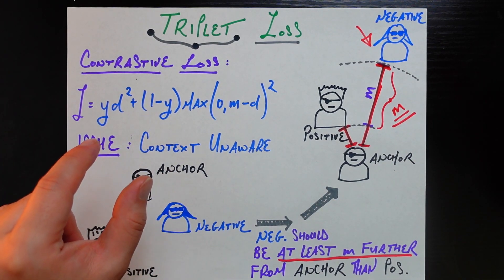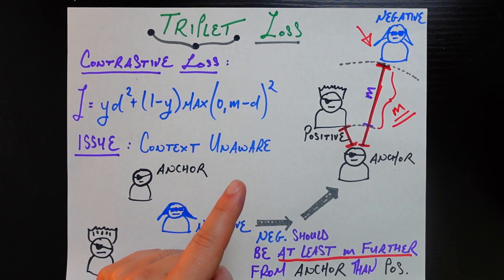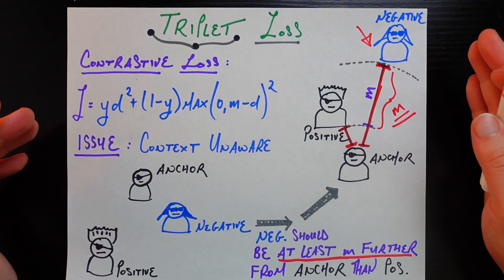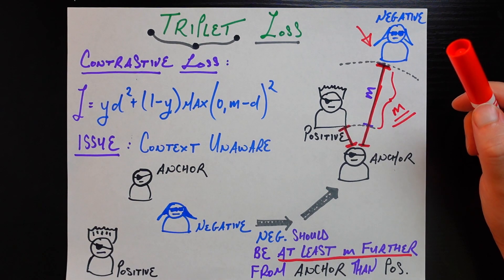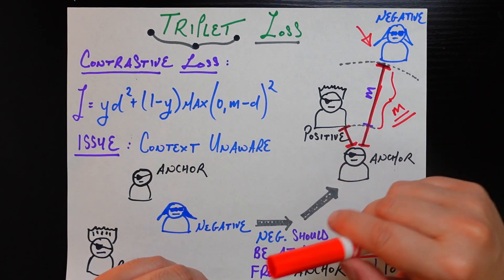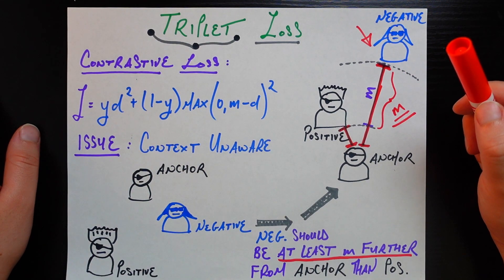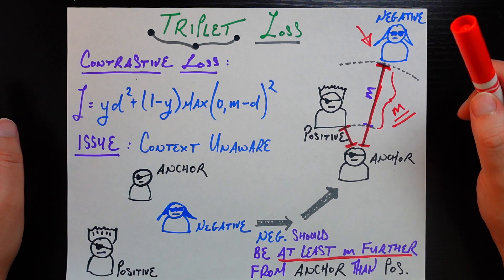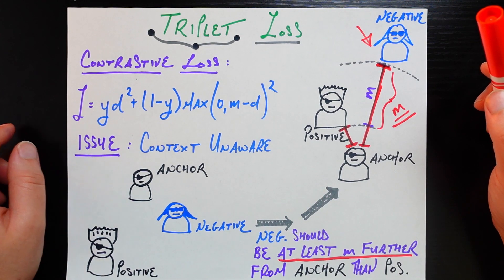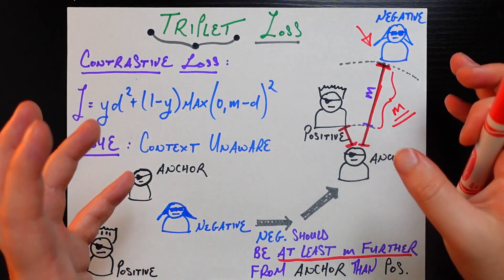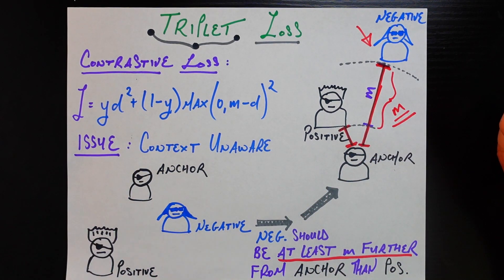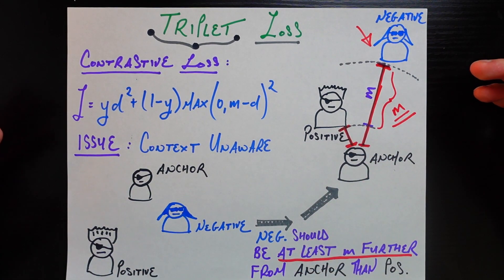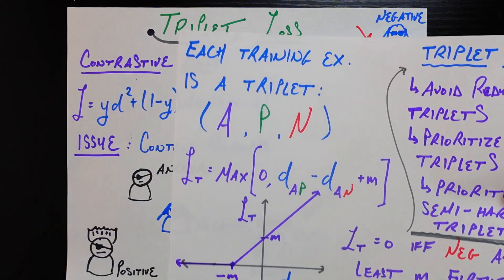Contrastive loss was narrowly focused: here's one example, here's another, I either want them close or far up to a certain degree. That might work for naive use cases, but in real-world use cases with hard positives and hard negatives, what we actually care about is making sure the classes are separated by a margin of at least m — and that gives us better results. Now, how do we express that mathematically?